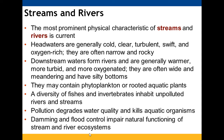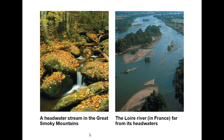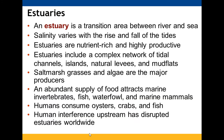In streams and rivers, current is the most prominent physical characteristic. Headwaters tend to be cold, clear, turbulent, swift, and oxygen-rich, often narrow and rocky — important to remember when rafting. Downstream, waters form rivers that are generally warmer, more turbid, and can be wide and meandering with silty bottoms, rooted aquatic plants, and phytoplankton. Unpolluted rivers and streams support diverse fish and invertebrates, but pollution degrades water quality. Damming and flood control impair the natural functioning of stream and river ecosystems.